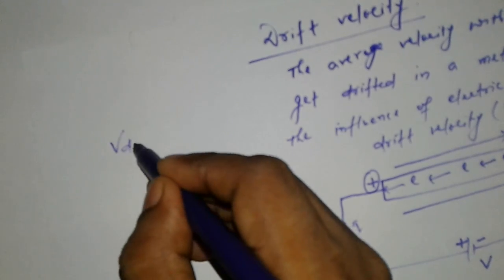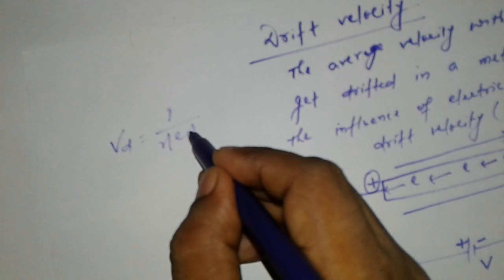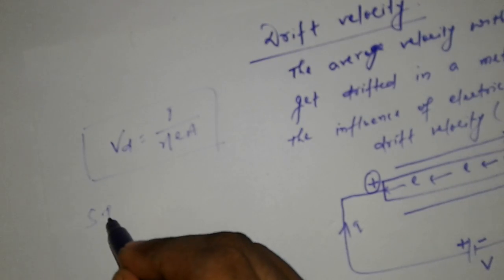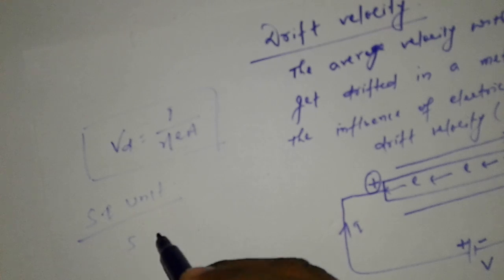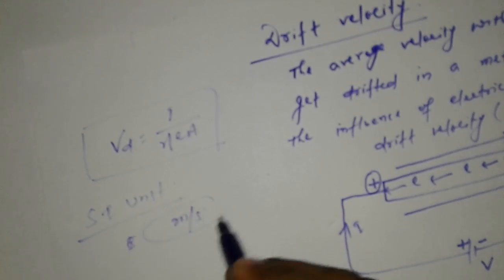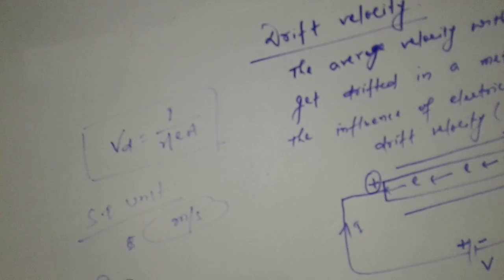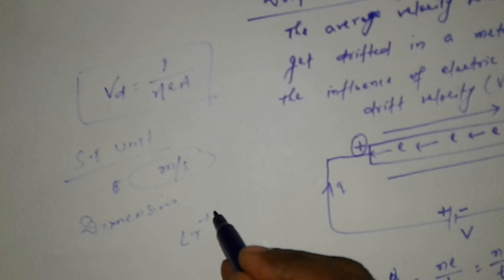What is the SI unit? Vd is equal to I by eta e A. The SI unit of Vd is meter per second. The dimension is L T minus 1.